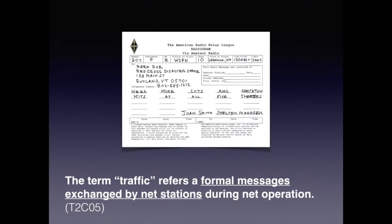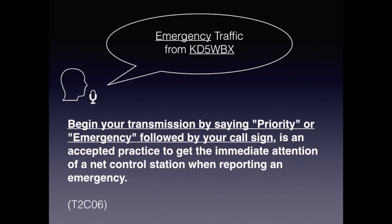The term traffic is used during emergency net operations. Here we see an example of traffic in the form of a radiogram. In this message we can see that the Red Cross Disaster Office is requesting more cots and sanitation kits. On the exam, you simply need to know that the term traffic refers to formal messages exchanged by net stations during net operations. During net operations it may become necessary to break in or interrupt normal flow of traffic due to an emergency or priority situation. You can say 'emergency traffic from KD5WBX' or 'priority traffic, this is KD5WBX.' For the exam, you begin your transmission by saying priority or emergency followed by your call sign.